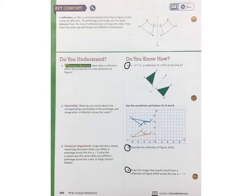So what we're looking for here is found back up here in the key concept. Remember, a reflection is a flip or a transformation that flips a figure across the line. The pre-image and the image are the same distance from that line of reflection, but on opposite sides. They have the same size and shape, but they're oriented differently.